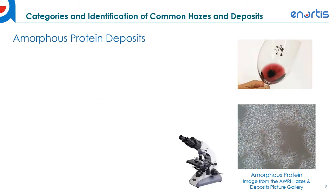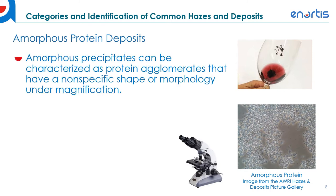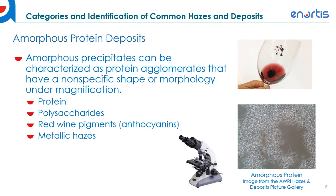Amorphous protein deposits can be characterized as protein agglomerates that have a nonspecific shape or morphology under magnification. They include a consortium of different wine compounds — anywhere from proteins to polysaccharides, red wine pigments, tannins — and also include metallic hazes in this category. I highly recommend going to the resources listed in this series; the Australian Wine Research Institute has a great haze and deposit picture gallery you can use to identify these deposits under a microscope.